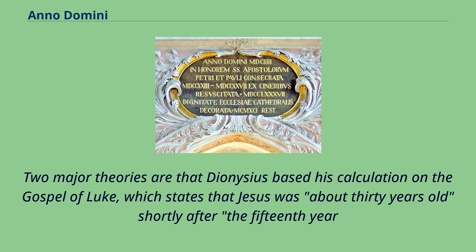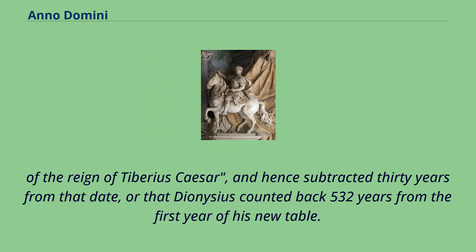Two major theories are that Dionysius based his calculation on the Gospel of Luke, which states that Jesus was about 30 years old shortly after the 15th year of the reign of Tiberius Caesar, and hence subtracted 30 years from that date; or that Dionysius counted back 532 years from the first year of his new table.